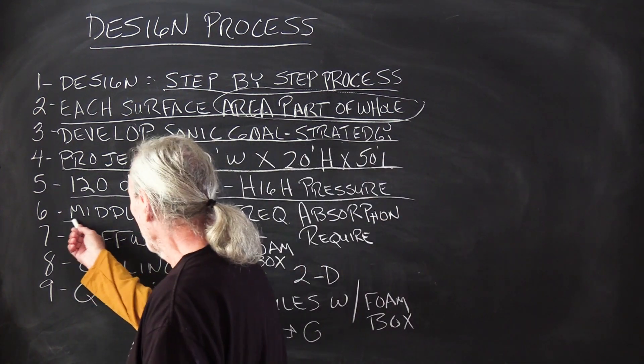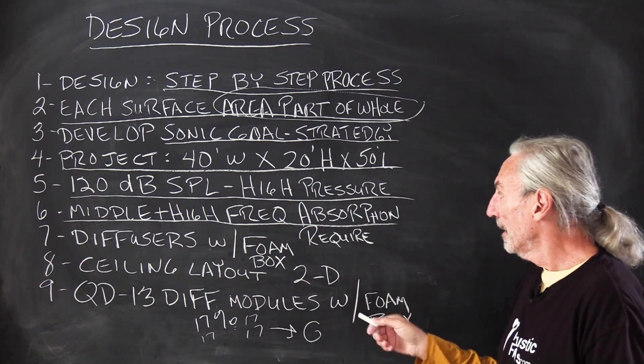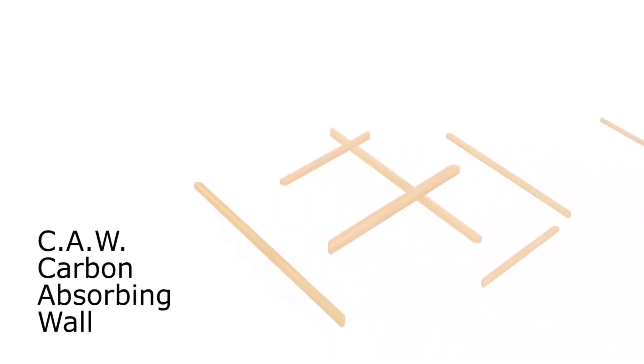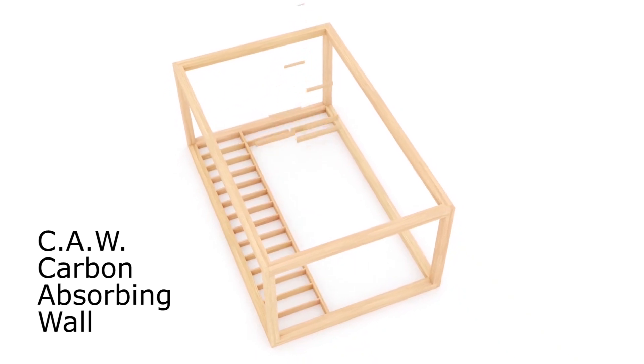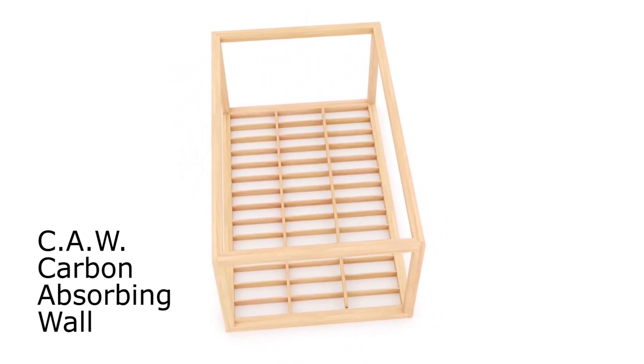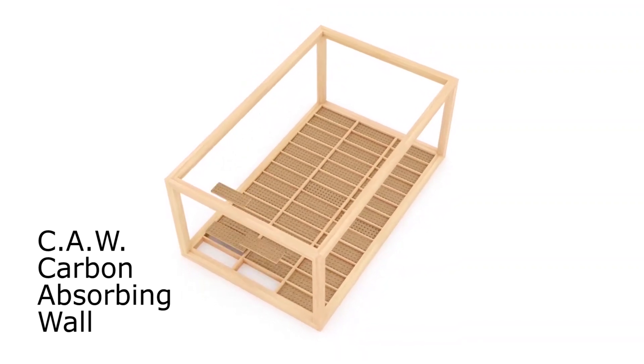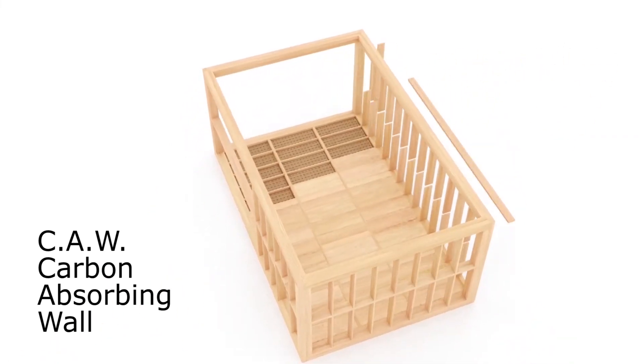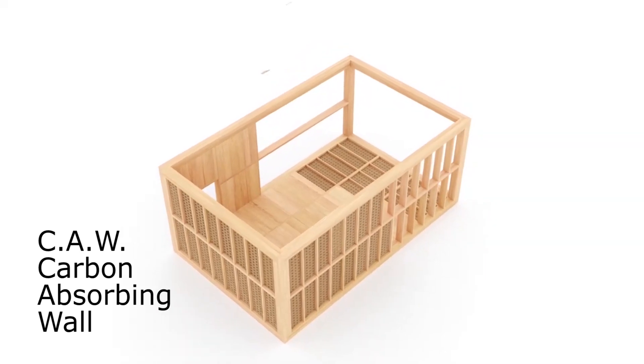So middle and high frequency absorption is definitely going to be something we consider. We're going to use low frequency absorption here for the high pressure. We're going to need a lot of it. We're going to need all four walls, probably floor and surface area at these pressure levels. We usually can get away with just treating the floor or the ceiling if pressure levels don't exceed 105. But once they start getting over 105, then you have to start treating all surface areas.